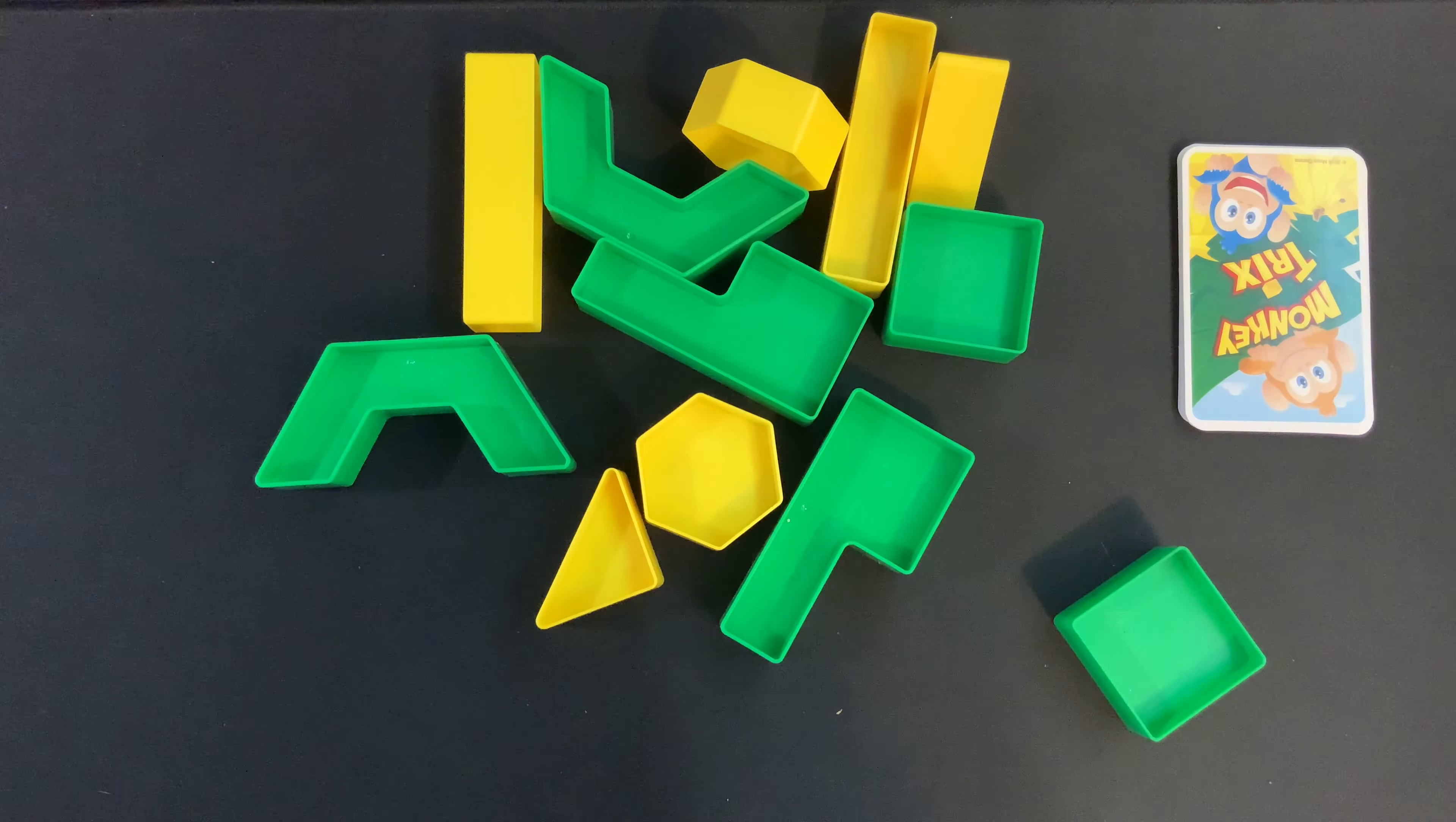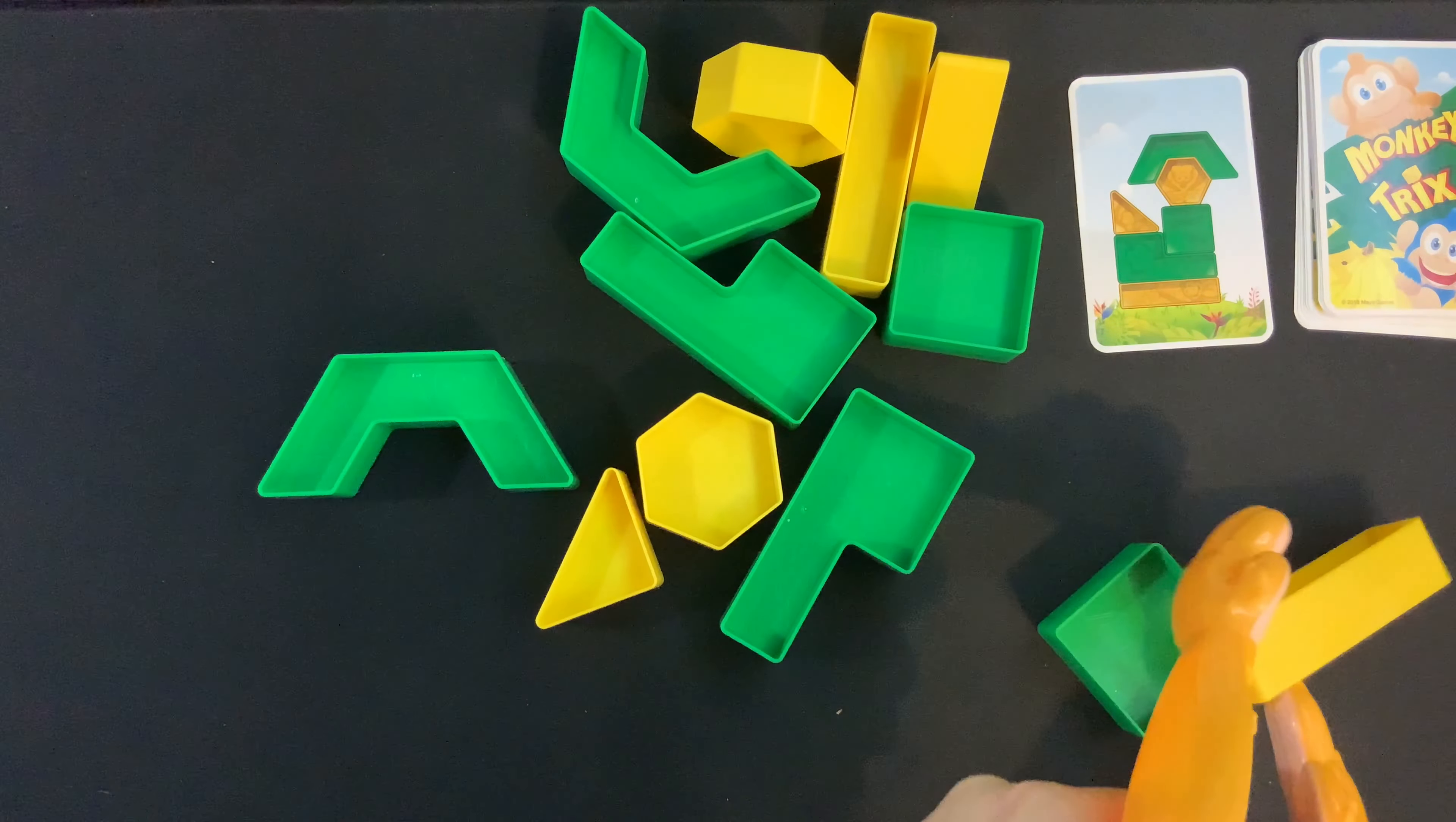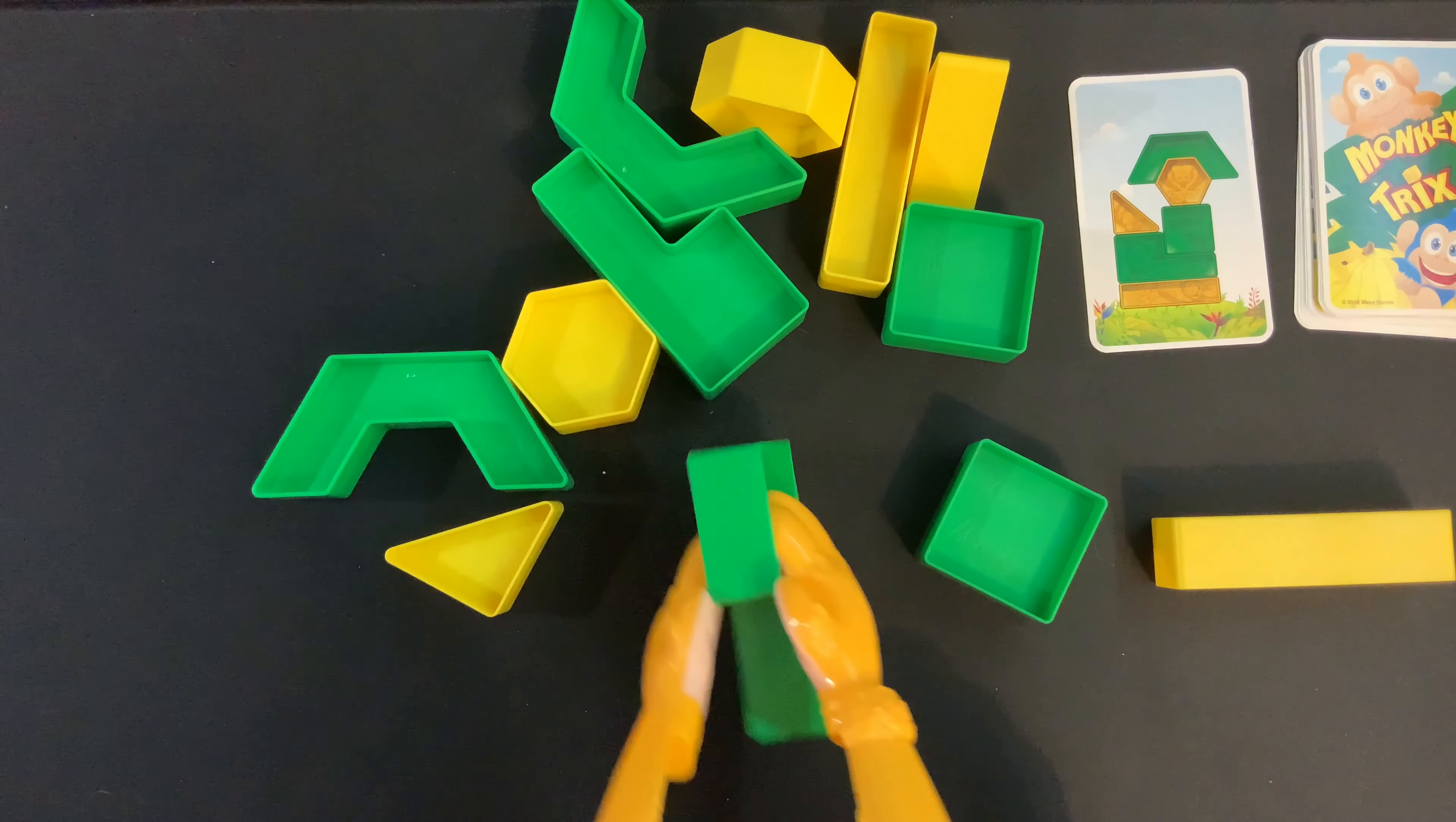Both players are ready. Now the youngest player is going to flip over the top card, place it in the center where everyone can see it, and now both players are going to race to put this together. There are enough pieces every single time for both players to be able to make it.